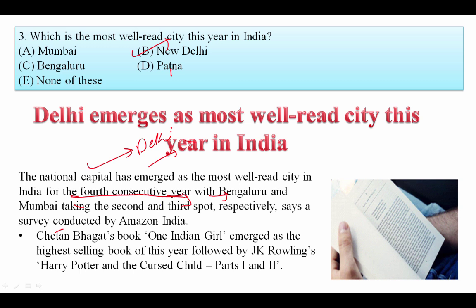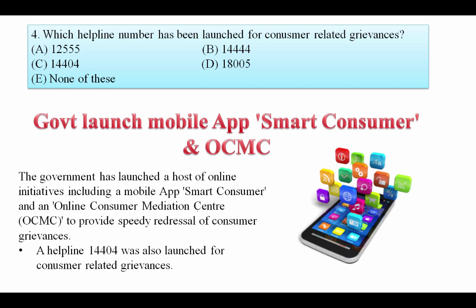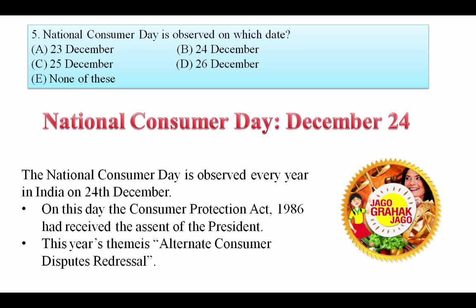Chetan Bhagat's book 'One Indian Girl' emerged as the highest selling book of this year, followed by J.K. Rowling's 'Harry Potter and the Cursed Child Part One and Two'. Which helpline number has been launched for consumer-related grievances? The government launched a mobile app called Smart Consumer, an online consumer mediation center OCMC, and a helpline number 14404 for consumer-related grievances. Your answer is C.